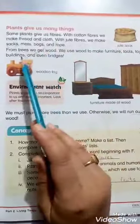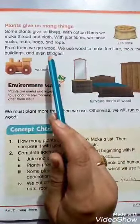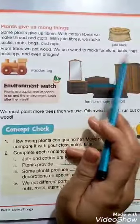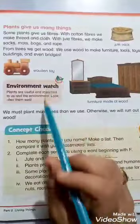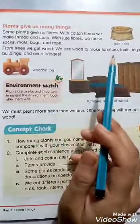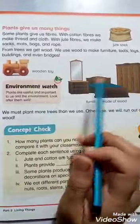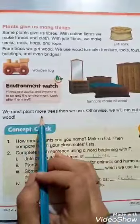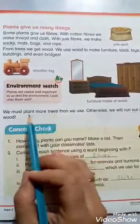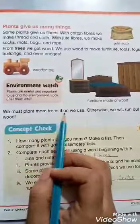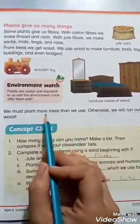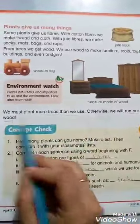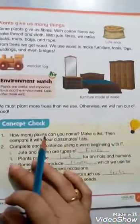From trees we get wood. We use wood to make furniture, tools, toys, buildings and even bridges. We must plant more trees than we use. Otherwise we will run out of wood. If we don't do this, there will be a shortage of wood — lakdi ki shortage hogi.